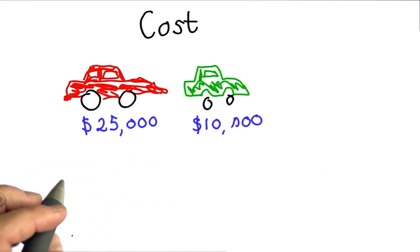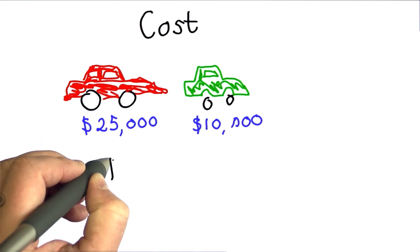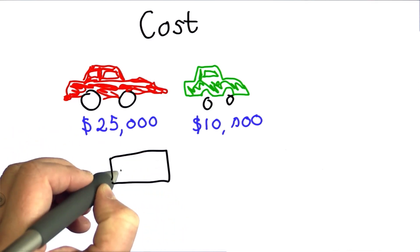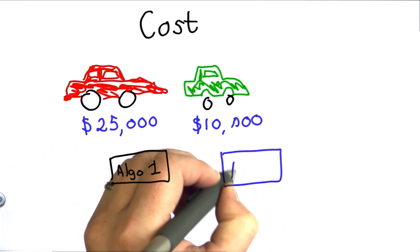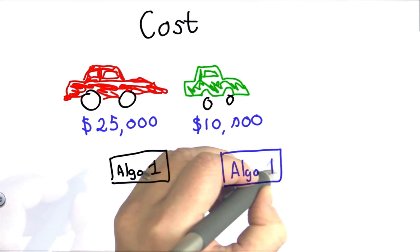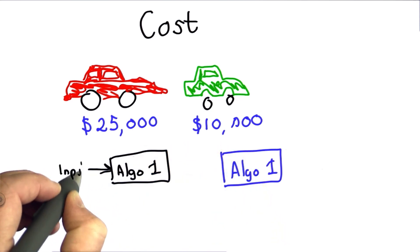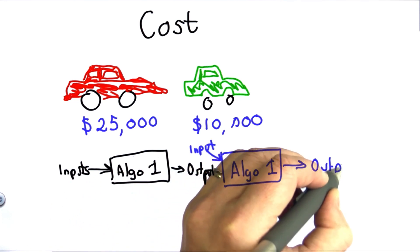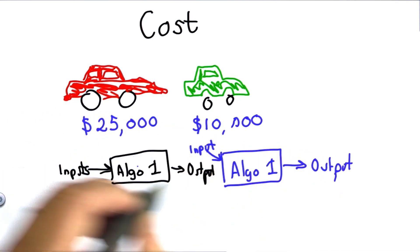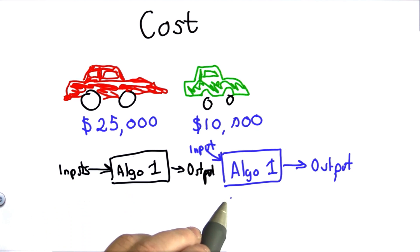So when we think about the cost of algorithms, we don't have a specific execution in mind usually. What we want to understand is how the cost depends on the input. So we might have two different algorithms. Let's say this is algorithm one. And we have a second algorithm that solves the same problem. And both of these are algorithms that take inputs and produce output.